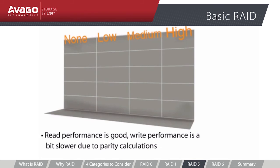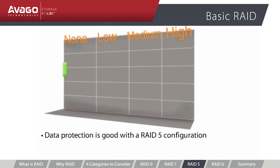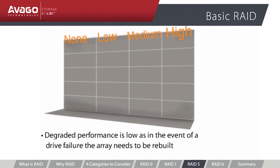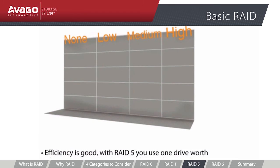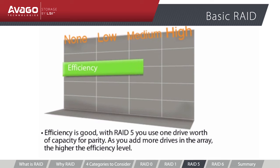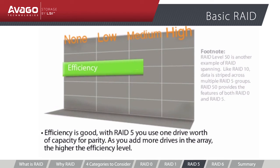RAID 5 offers high performance. Read performance in a RAID 5 configuration is virtually as good as RAID 0, while write performance is slower due to the processing required to calculate parity. Data protection and availability is good, but RAID 5 tolerates only one drive failure. Degraded performance is low — upon a drive failure, the RAID controller reconstructs the data set by rebuilding the array using available parity information, affecting all drives since parity is distributed to all of them. Efficiency is good: with RAID 5, one drive's worth of capacity is used for parity. The more drives in the array, the more efficient it becomes — a 4-drive array would be 75% efficient, while 10 drives would be 90% efficient.